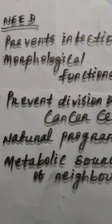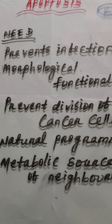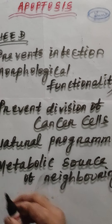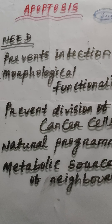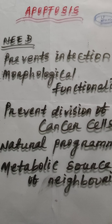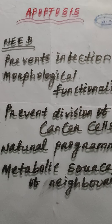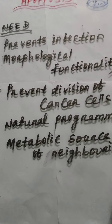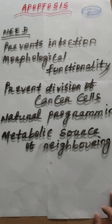Now come to the need of apoptosis — why is apoptosis needed in the organism? First, it prevents infection. When an infected cell is destroyed by a biological or non-biological agent, the cell immediately enters into the process of programmed cell death. During this process, the infection fails to spread to further neighboring cells.